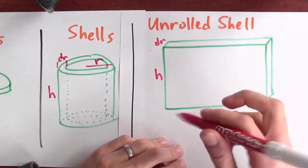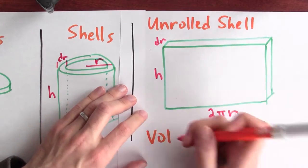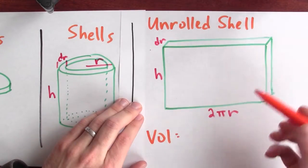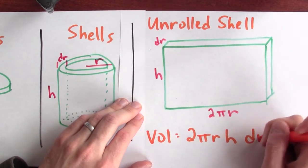And multiplying these three dimensions will give me the volume of the slab. So you'd guess then that the volume of the shell or the slab is 2πrh dr.